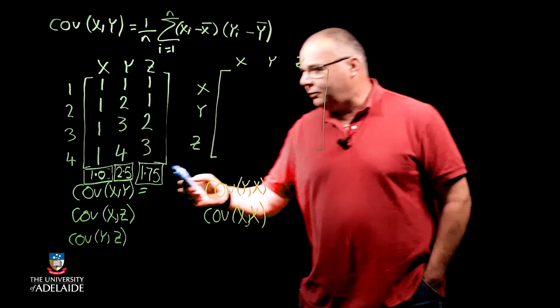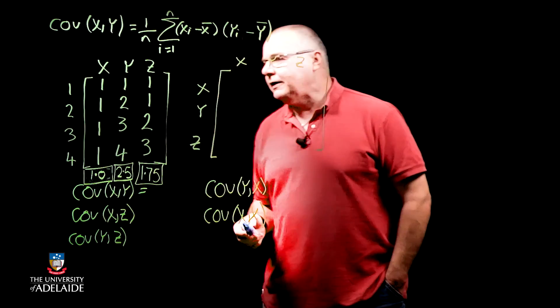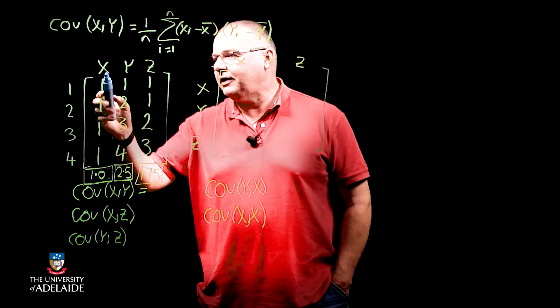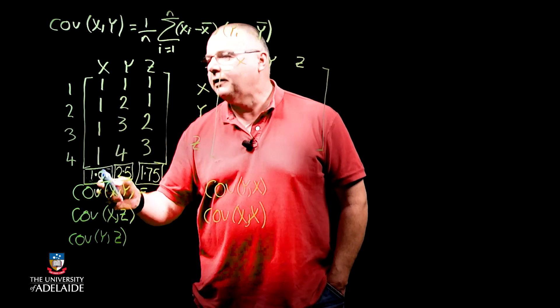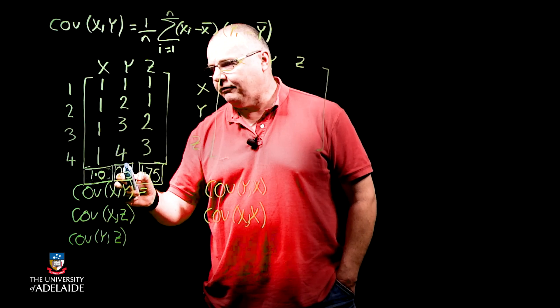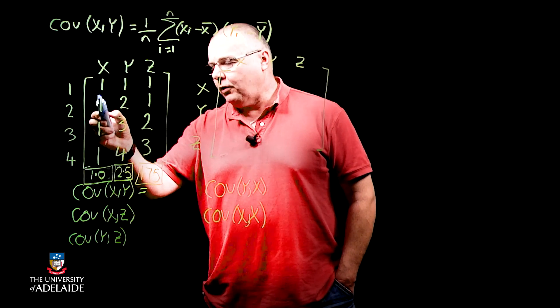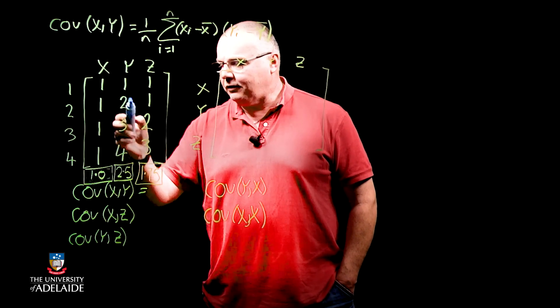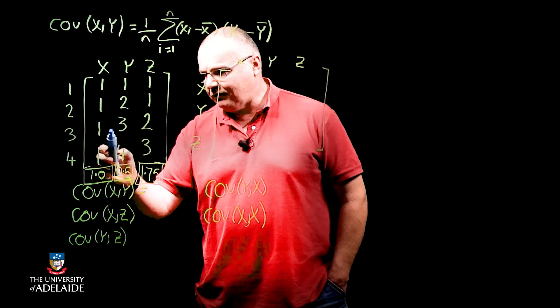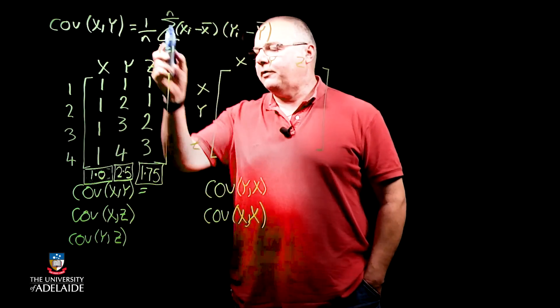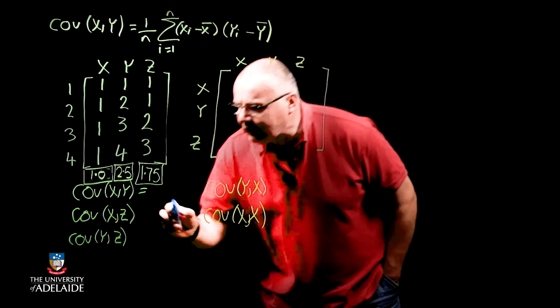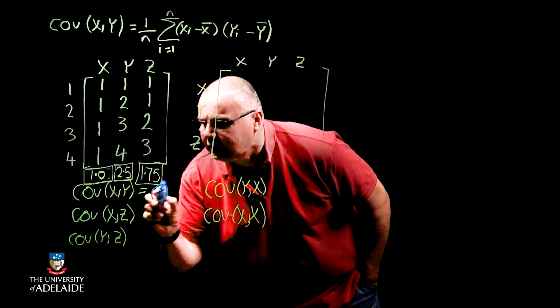So we take the xi minus x bar and multiply it by the yi minus y bar. So for example, if I wanted to work out the covariance of x and y, let's do the calculation. It would be one minus one multiplied by one minus 2.5. Go down to the next one, one minus one times by two minus 2.5. We do that for every single subject, add them all up and divide by four. And if you do that calculation, you should get zero.